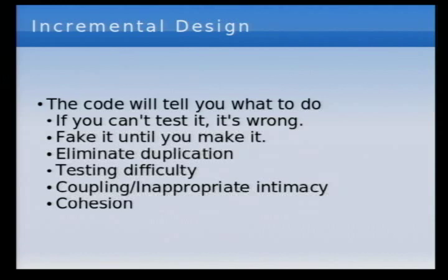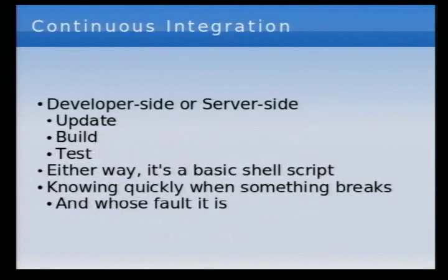Continuous integration: build your software all the time. If you have an automated build that runs once a day, run it all the time — there's no reason to wait until midnight or 5 a.m. to find out your code doesn't compile or tests are failing. You don't need a dedicated build machine — you can have a shell script that does an SVN update, compiles the code, runs the unit tests, and runs the system tests. That's like a four-line shell script.